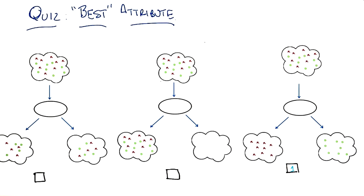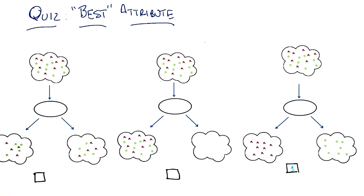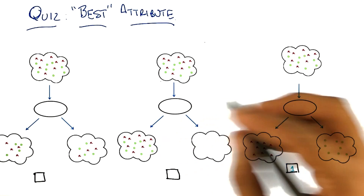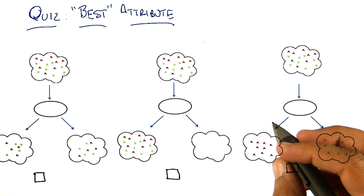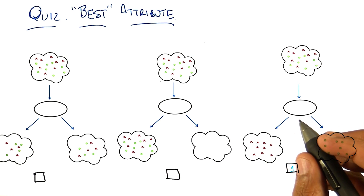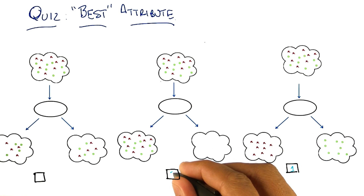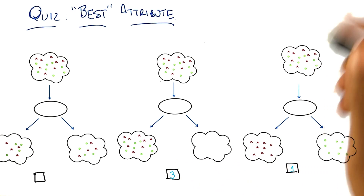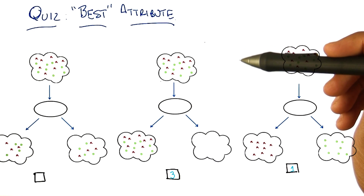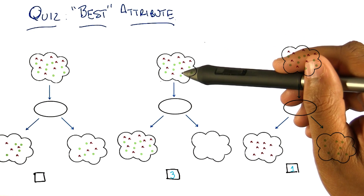The worst one I think is also easy to pick. If you look at the middle attribute, we take all the data and we put it all on the left. So we've really just kicked the can down the road a little bit. There's nothing that this attribute splitting has done. I would call that the worst possible thing you could do, which is basically to do nothing. And in fact, it really is doing nothing.